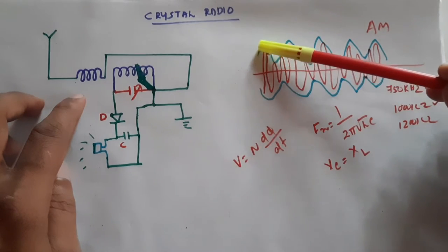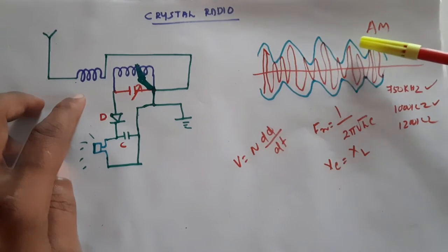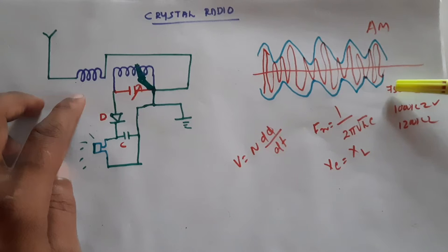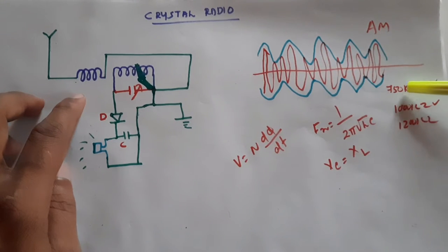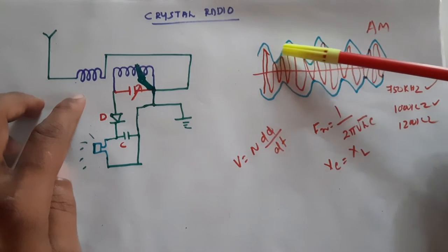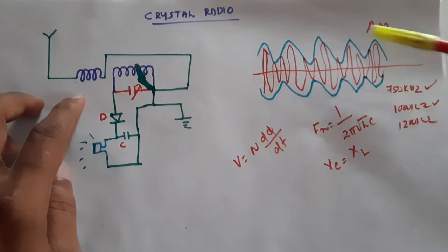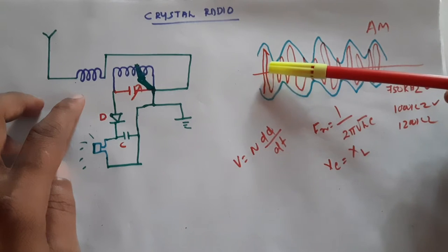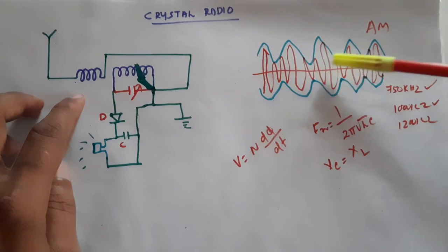The voice signal is a very low frequency signal. If we want to transmit it, say a station is allowed a frequency of 750 kilohertz, they take the message signal and modulate it with the 750 kilohertz carrier frequency. When modulating the message signal with the carrier frequency, we get a signal whose amplitude varies according to the message signal while the frequency remains the same — that is amplitude modulation.